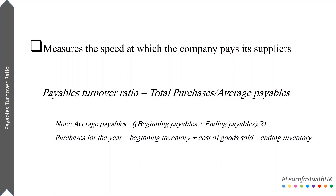The total purchases that the company has made are not directly given on the income statement, balance sheet, or any financial statement sometimes. However, there is a way we can always calculate that. It can be calculated by taking beginning inventory, adding the cost of goods sold, and subtracting the ending inventory. The result will be the purchases the company made throughout the year.